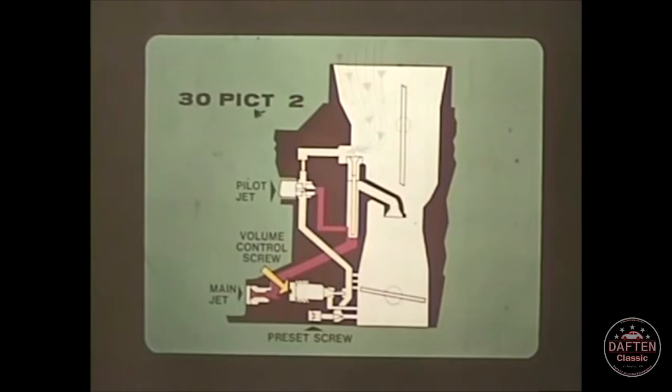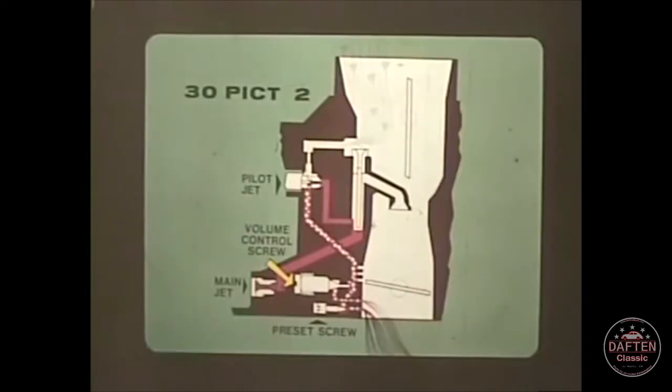Air entering the idle circuit passes through a calibrated hole to the pilot jet where it mixes with fuel. The fuel air mixture reaches the volume control screw as before, but a portion of the mixture is controlled by a factory preset screw. So adjusting the volume control screw makes only a small difference in engine RPM.